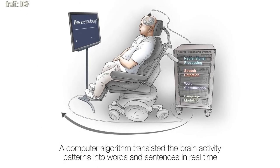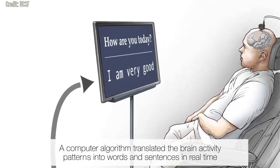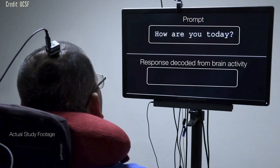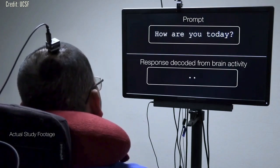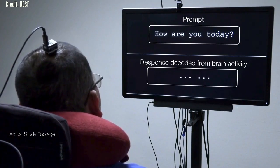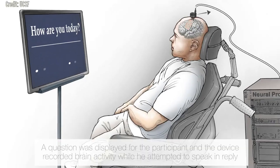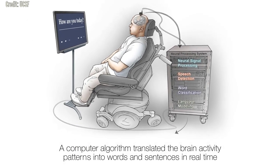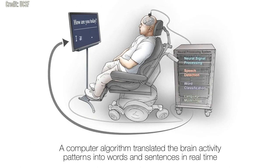With speech, we normally communicate information at a very high rate, up to 150 or 200 words per minute. But spelling-based approaches, using typing, writing, and controlling a cursor, are considerably slower and more laborious. Going straight to words has great advantages because it is closer to how we normally speak.